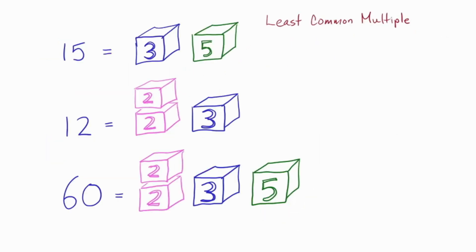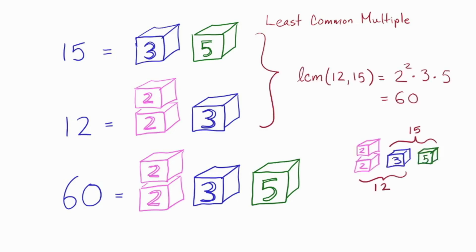So, the cousin of the gcd is the LCM, which stands for least common multiple. It's the smallest number which is a multiple of both your given numbers. In terms of the picture, it's the smallest castle that contains both the other castles. For 12 and 15, the LCM has to contain two pink twos, one blue three, and one green five. It has to contain everything you need to make 12 and everything you need to make 15, but nothing extra.